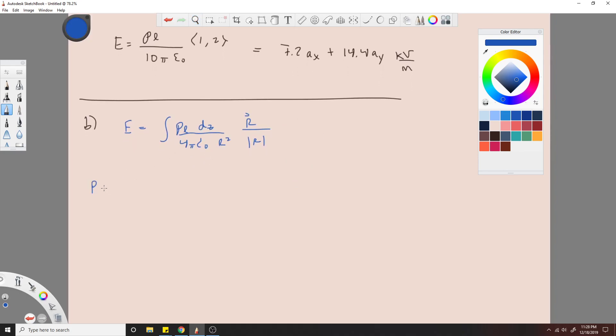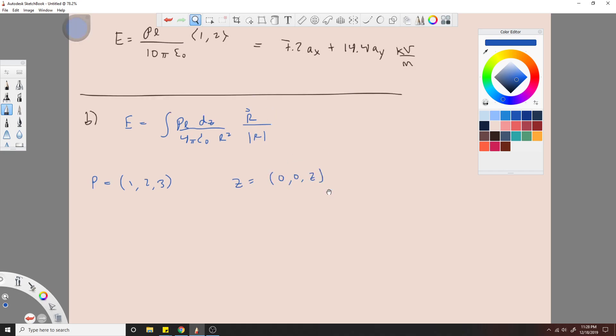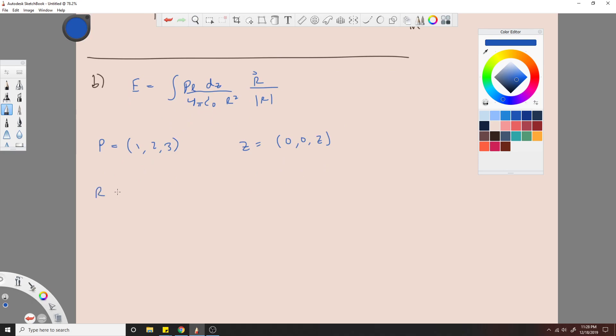And that equals, and then you do the same thing. So now P is equal to 1, 2, 3 again. Z is equal to 0, 0, Z. But this time when you do your R P z, 1, 2, 3, you can't leave this out. Like before, remember we said there's not going to be any vertical components here. Well, we can't assume that anymore because this is not infinite.